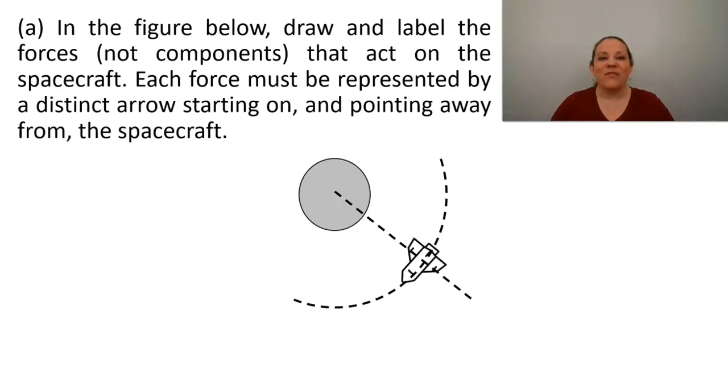Part A. In the figure below, draw and label the forces, not components, that act on the spacecraft. Each force must be represented by a distinct arrow starting on and pointing away from the spacecraft.